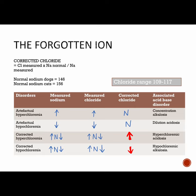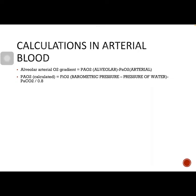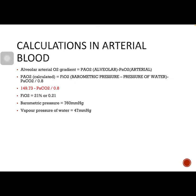You need to estimate the alveolar-arterial (AA) oxygen gradient if you draw arterial blood. The AA gradient measures the difference between the alveolar concentration of oxygen and the arterial concentration of oxygen. It is a useful parameter for narrowing down the differential diagnosis of hypoxemia and helps assess the integrity of the alveolar-capillary unit. Partial pressure of oxygen in arteries can be measured using pulse oximetry, whereas the partial pressure in alveoli (PAO2) must be calculated using FiO2, barometric pressure, and vapor pressure of water.